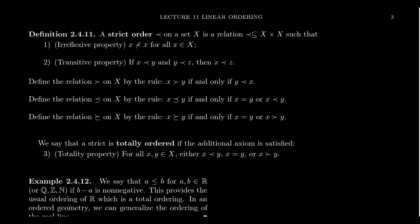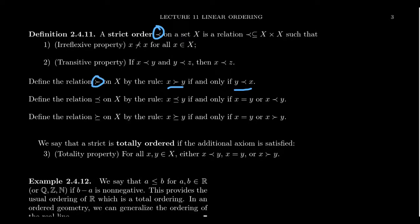Whenever you construct a strict order, there are other relations related to it that are also important. We're generalizing the notion of the less-than symbol; its axiomatics are that it's irreflexive and transitive. We can also talk about greater than — we define X is greater than Y if and only if Y is less than X. There's a direction to an ordering, and we can define its inverse relation by flipping it around. You can call both of them the strict order because if you have one, you have the other.